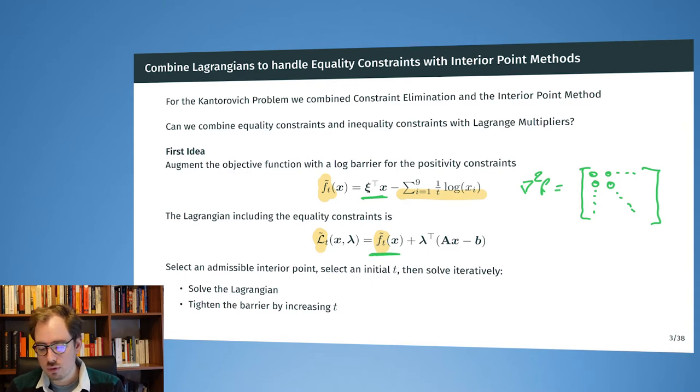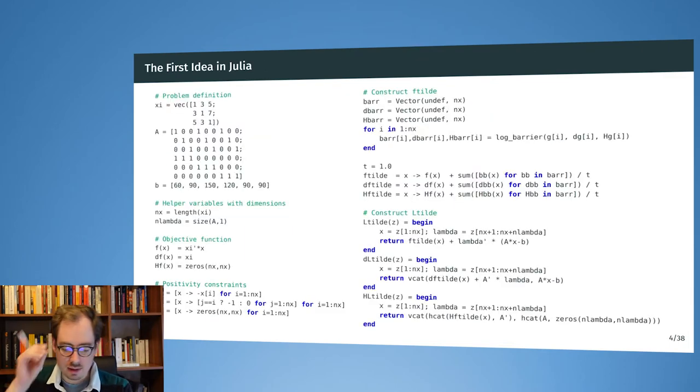Now since we are having here the additional log barrier, we will have some more entries. And in this case we will have some more entries here on the diagonal. So here we will have some entries on the diagonal. However, when we are far enough from the barrier, then these entries on the diagonal will be pretty small. And again it will be numerically difficult to find the inverse of this Hessian.